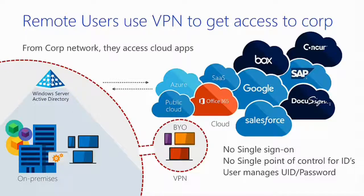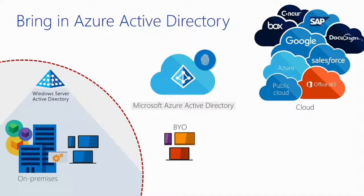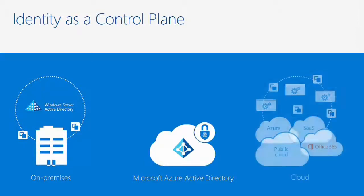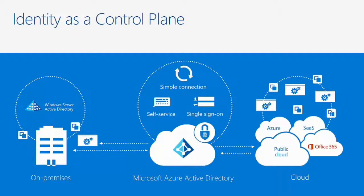When you bring in Azure Active Directory, you still have all those cloud applications, but now Azure Active Directory sits in the middle and provides identity as a control plane for administrators and end users. You have the on-premises environment with Windows Server Essentials or other Windows servers with Active Directory, then Azure Active Directory, then all the cloud properties you want access to. There's a simple, bidirectional, self-service connection between on-prem Active Directory and single sign-on to cloud SaaS applications.